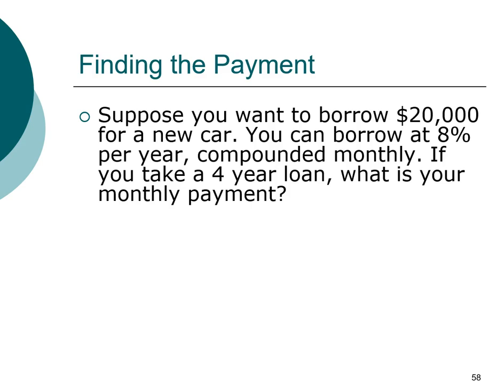This is a relatively practical problem. Let's say you want to borrow $20,000 for a new car and the interest rate is going to be 8%. You have to make monthly payments, so the interest is compounded on a monthly basis. You're going to take out a four-year loan. What is your monthly payment?